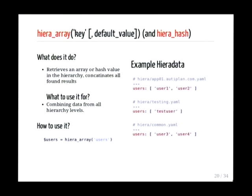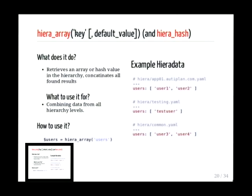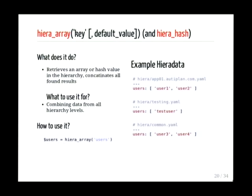We also have hiera_array, which returns an array but doesn't stop at the first hit — it goes through all hierarchy levels and concatenates all results. So for app01 in the testing environment, this call might return an array of five values: two from the host-specific file, one from testing.yaml, and two from common. If you do the same on app02, which doesn't have the 'users' key in its most specific file, it returns only three users. This makes it very powerful for values that apply to all machines plus some specific to individual machines. hiera_hash does the same thing for hashes.